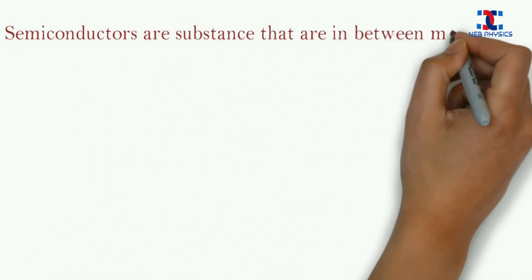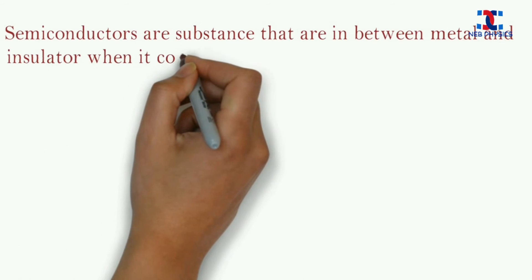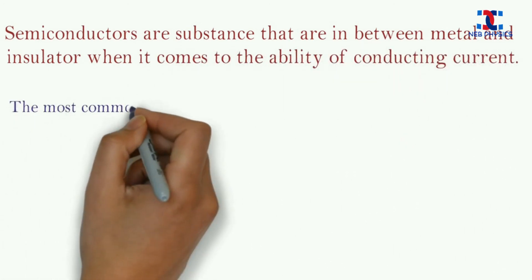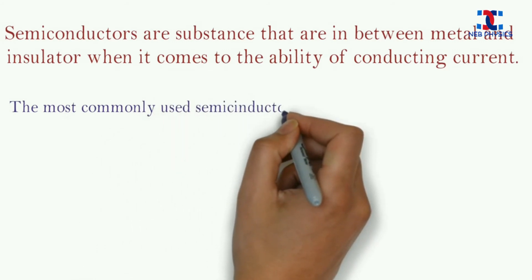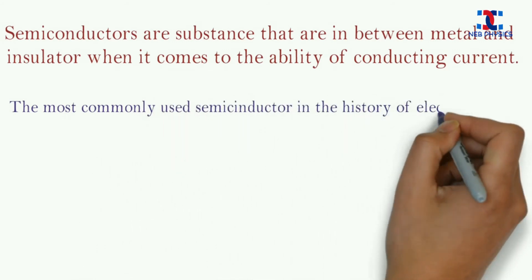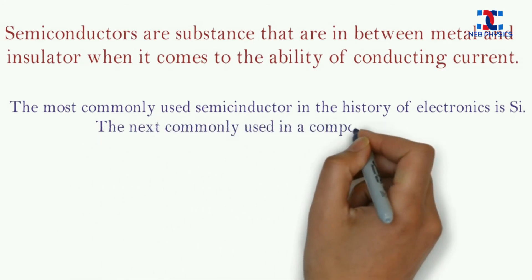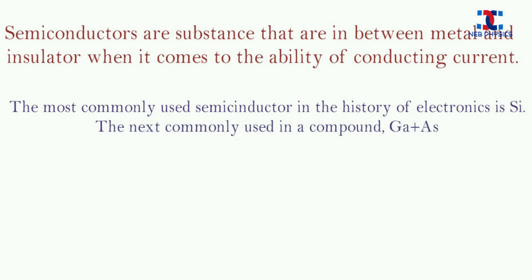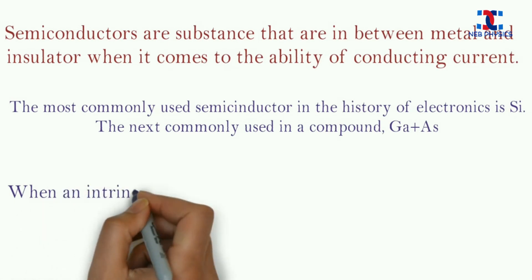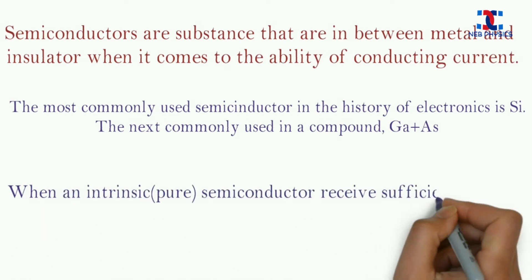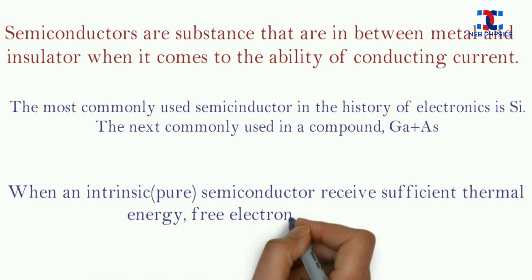Semiconductors are substances that are in between metals and insulators when it comes to the ability of conducting current. The most commonly used semiconductor in the history of electronics is silicon and the next commonly used is a compound, gallium arsenide. When a pure or intrinsic semiconductor is provided sufficient thermal energy, free electrons are produced. Now let's understand this more clearly with the help of this animation.